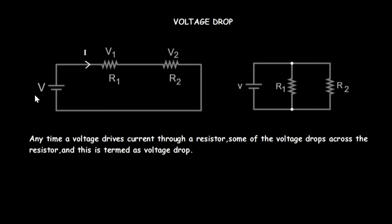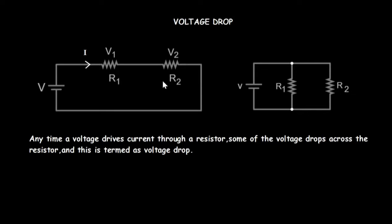With the voltage from the source, when this voltage drives current through resistor R1, some of the voltage will be dropped across R1 due to the resistance it is offering. Similarly, some of the voltage will also drop across resistor R2 due to the resistance it is offering. This is what is termed the voltage drop.